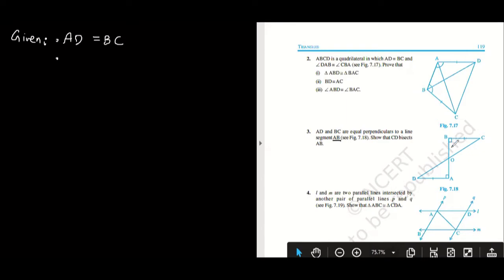So AD and DC are perpendicular to AB. Can you see that 90 degrees? So therefore angle A equals angle B equals 90 degrees. This information is also given, okay.